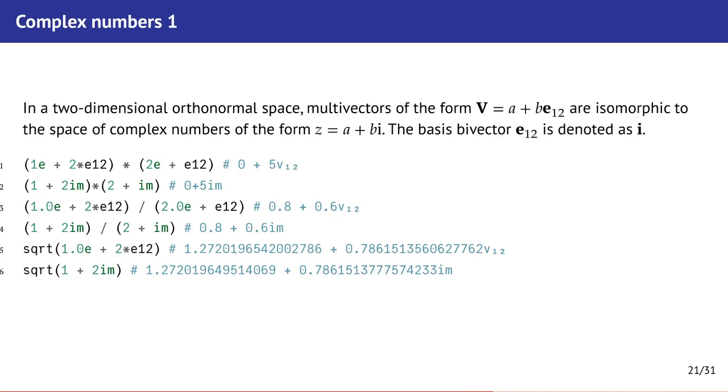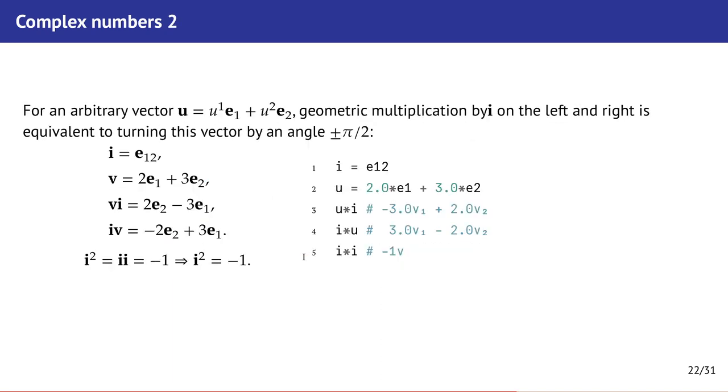Another example. A multivector of a special kind, scalar part plus bivector in two dimensions, is isometric to complex number. The role of imaginary unit, in this case, plays the basis bivector. The code is shown below and there are some drawbacks in this code at line 5. If we use here integer coefficient, we will have error because of a bug in Grassmann.jl module.